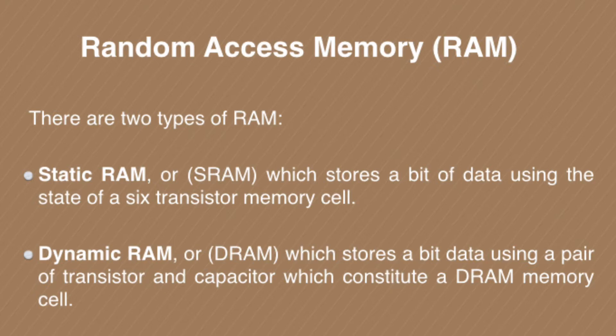Static RAM stores a bit of data using the state of a six-transistor memory cell, so it is constructed with the help of transistors. On the other hand, Dynamic RAM also stores a bit of data but is constructed with the help of one transistor and one capacitor.